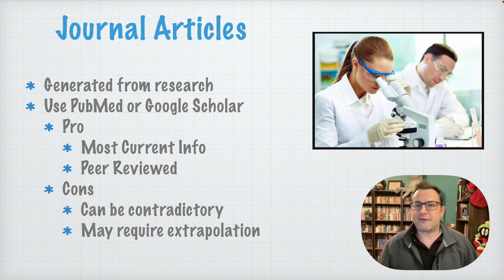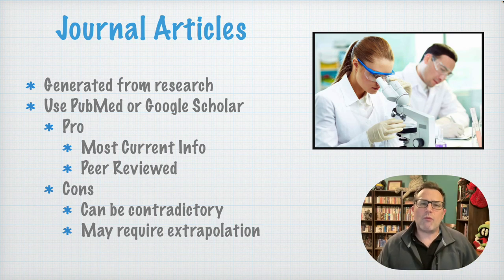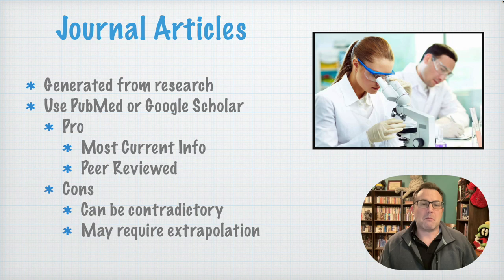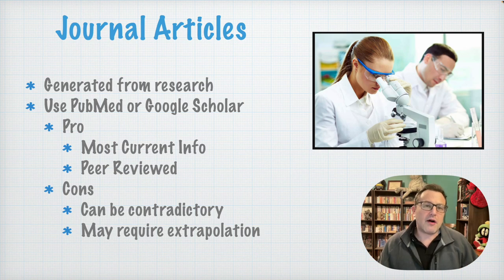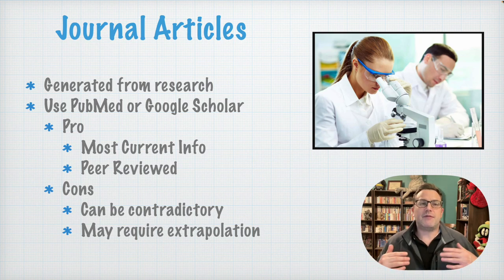Journal articles are generated from research typically. Sometimes there are analyses or meta-analyses of the literature, but they are based on practice of research in some way. You can use PubMed or Google Scholar, and there are other ones — there's Biostatistica. I think any research library that gives you access to credible research journals is fine. I don't care where they come from as long as they're credible sources. The pro of journal articles is that they tend to be the most current info — this is based on research that is being conducted right now, so this is the most recent information that we tend to have.